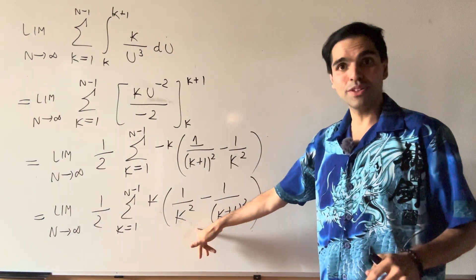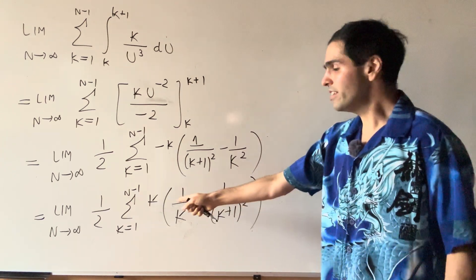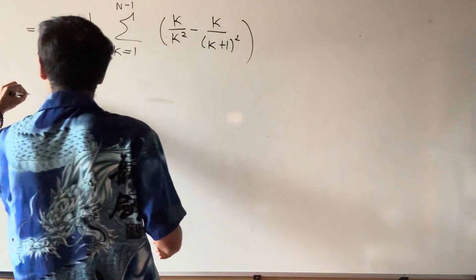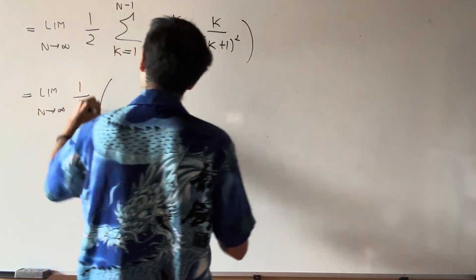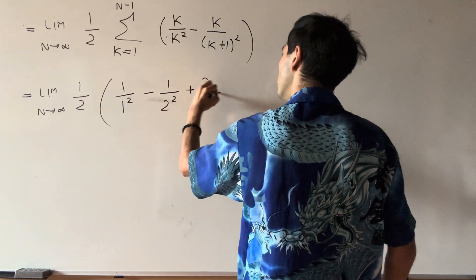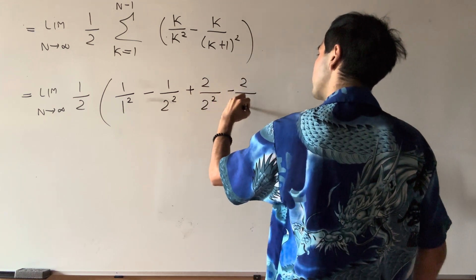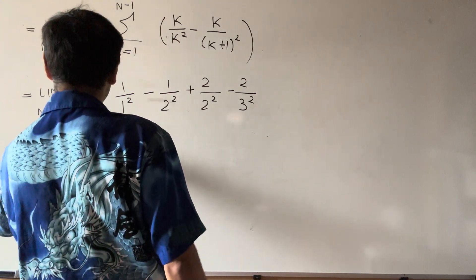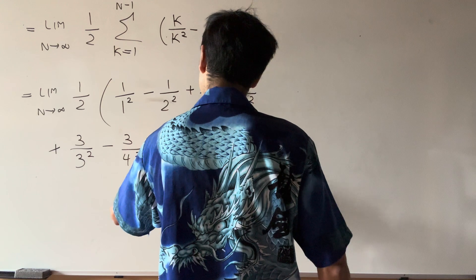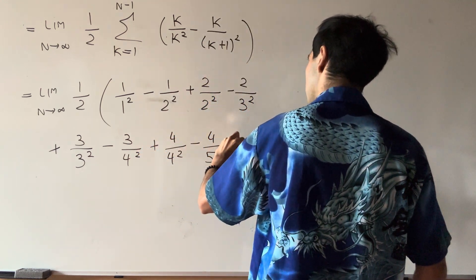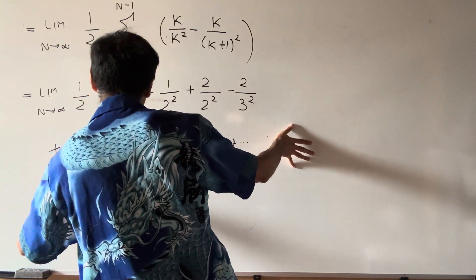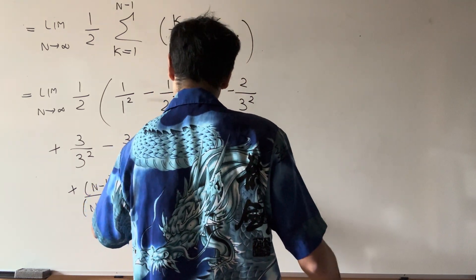And then you will see there will be a telescoping trick going on. Let's write down the first couple of terms in the sum — distributing the k's. We get the limit as n goes to infinity of 1 half of: 1 over 1 squared minus 1 over 2 squared, plus 2 over 2 squared minus 2 over 3 squared, plus 3 over 3 squared minus 3 over 4 squared, plus 4 over 4 squared minus 4 over 5 squared, and so on, up to n minus 1 over n minus 1 squared minus n minus 1 over n squared.